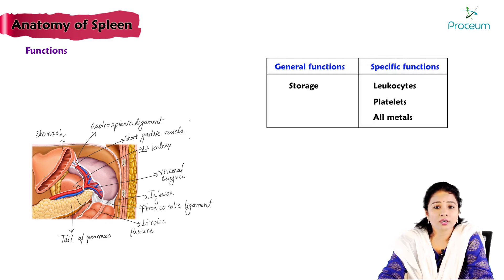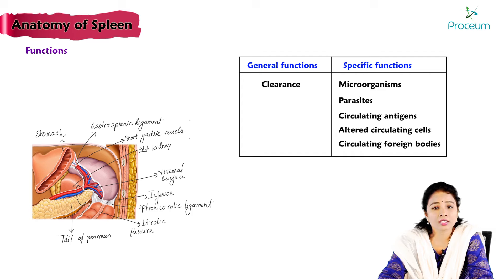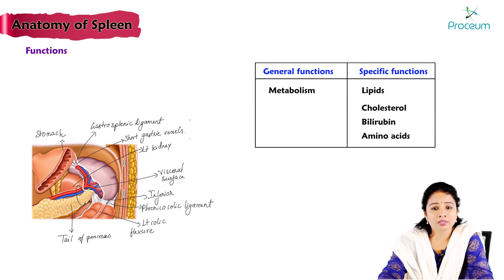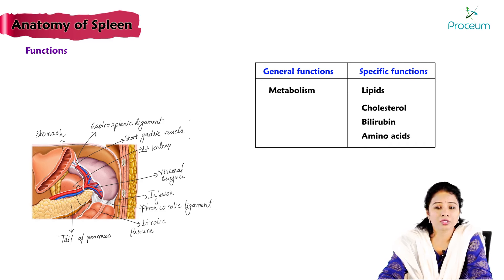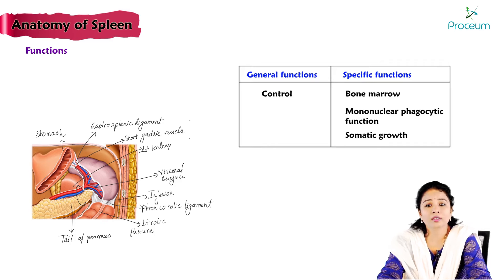The spleen is a storage organ for leukocytes, platelets, and metals. It is a clearance organ that removes microorganisms, parasites, circulating antigens, altered circulating cells, foreign bodies, and senile RBCs. In terms of synthesis and metabolism, the spleen is an important precursor of hepatic functions and helps in metabolism of lipids, cholesterol, bilirubin, and amino acids. The spleen also controls bone marrow, mononuclear phagocytic function, and somatic growth.